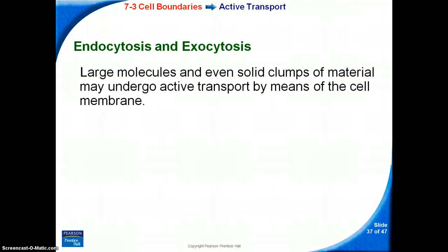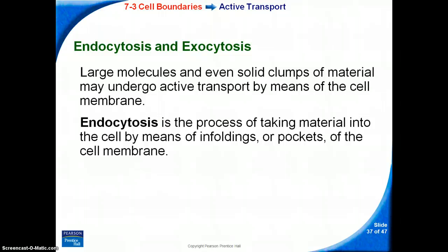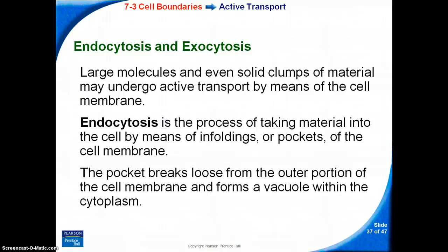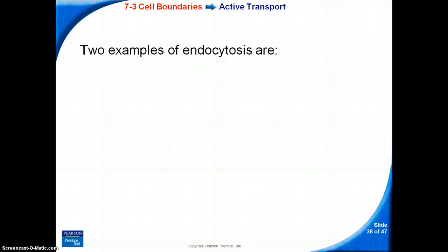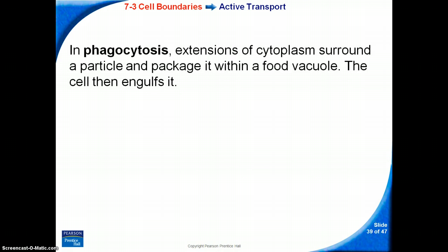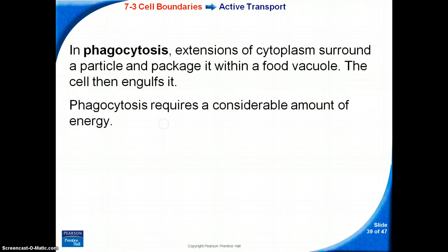Endocytosis and exocytosis: large molecules and even solid clumps of material may undergo active transport by means of the cell membrane. Endocytosis is the process of taking material into the cell by means of infoldings, or pockets, of the cell membrane. The pocket breaks loose from the outer portion of the cell membrane and forms a vacuole within the cytoplasm. Two examples of endocytosis are phagocytosis and pinocytosis. In phagocytosis, extensions of cytoplasm surround a particle and package it within a food vacuole, and the cell then engulfs it. Phagocytosis requires a considerable amount of energy.